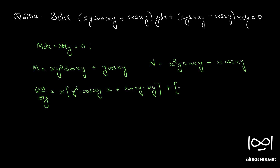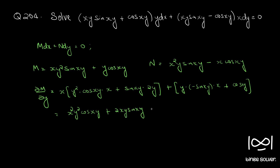Plus ∂M/∂y of the second term, again product rule: y into cos(xy) is -sin(xy) and differential of xy is x, plus sin(xy) into cos(xy) into 1. Simplifying: x²y²·cos(xy) + 2xy·sin(xy) - xy·sin(xy) + cos(xy). This is ∂M/∂y.